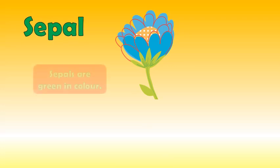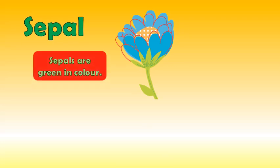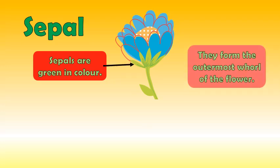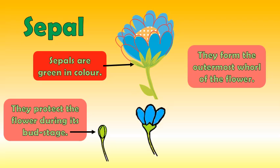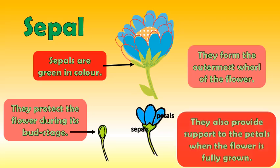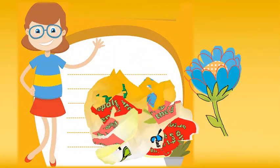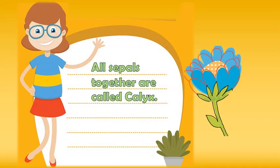Sepals are green in color. They form the outermost whorl of the flower and protect the flower during its bud stage. They also provide support to the petals when the flower is fully grown. All sepals together are called the calyx.